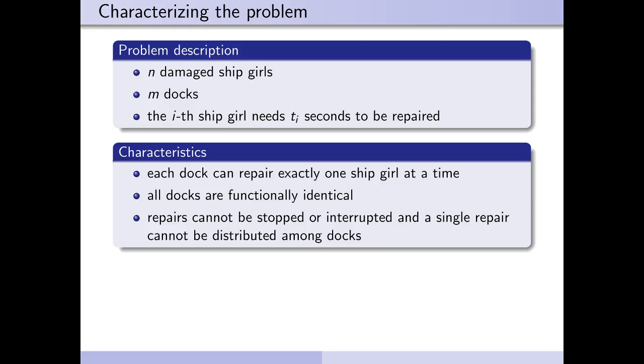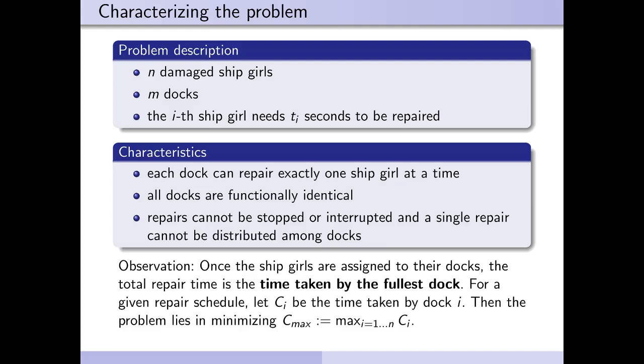Well, then we can easily observe the following. Once the shipgirls are assigned to their docks, the total repair time is the time taken by the fullest dock. For a given repair schedule, let Ci be the time taken by dock number i. Now the problem lies in minimizing Cmax, which is the time taken by said fullest dock. The question is, can we automate this process? Can we build an algorithm for it? And most importantly, can we draw any useful conclusions on how we should schedule our shipgirls by hand?